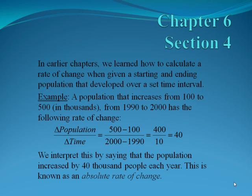In Calculus 1, we learned how to calculate the rate of change when given a starting and ending population that developed over a set time interval. For example, a population that increases from 100 to 500 in thousands from 1990 to 2000 has the following rate of change. We do the change in population, 5000 minus 1000, over the change in time, 2000 to 1990. That gives us 400 divided by 10, which equals 40 — again, this is in thousands. We interpret this by saying the population increased by 40,000 people each year. This is known as the absolute rate of change.